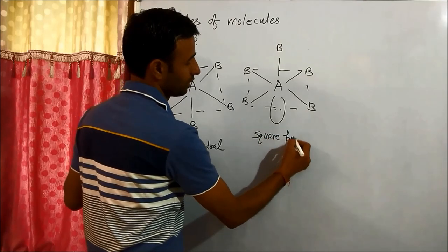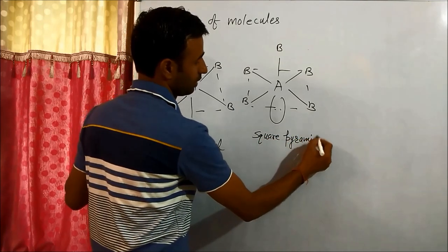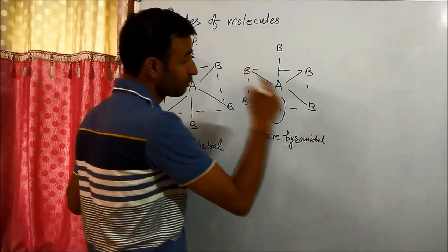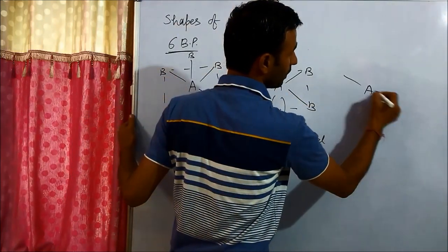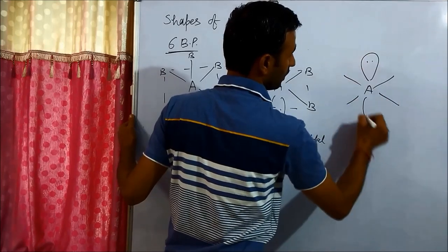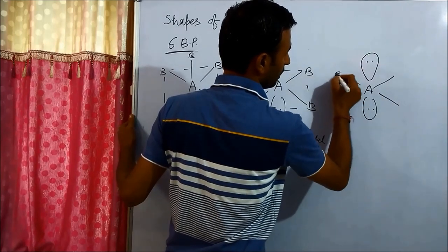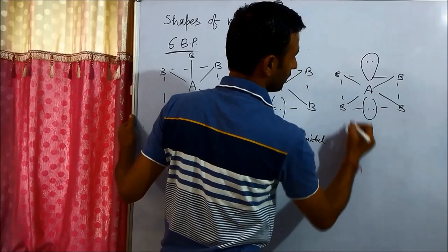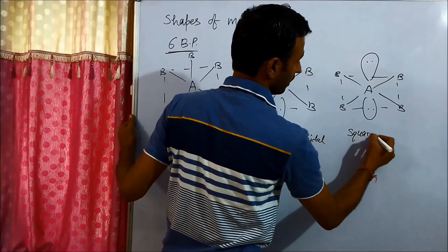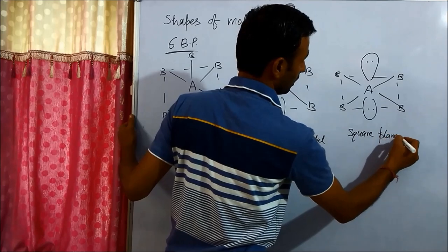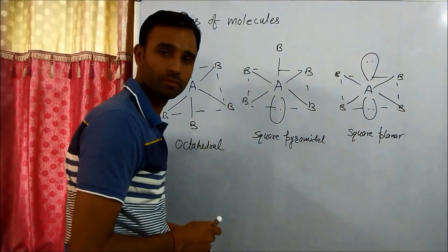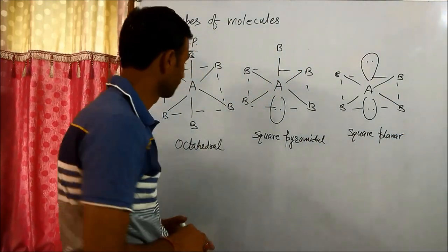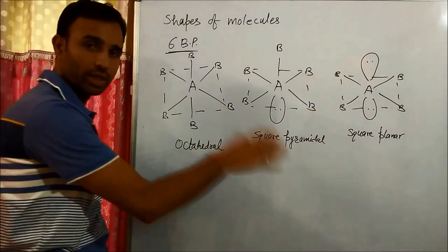If we have two lone pairs, then the shape is square planar. Right, so these are the shapes for six bond pairs.